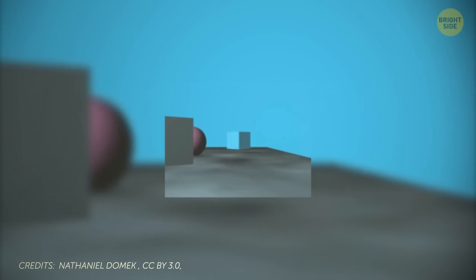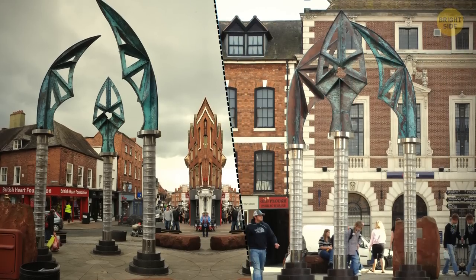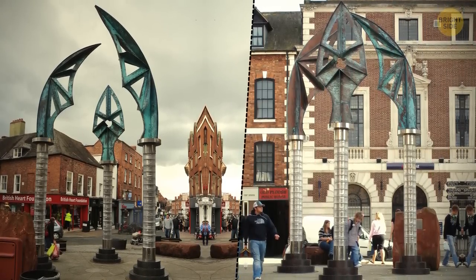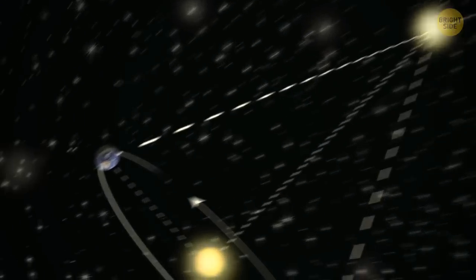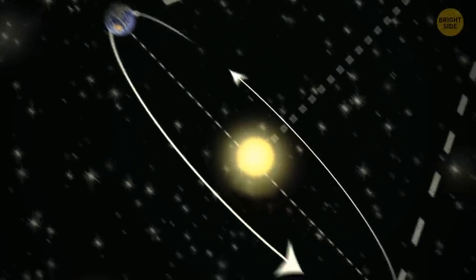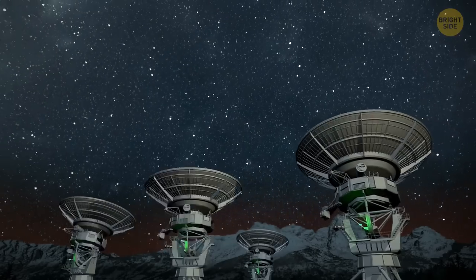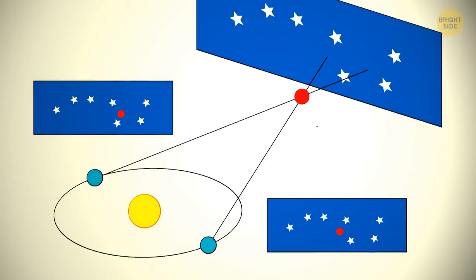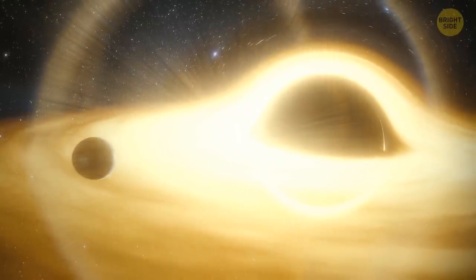Parallax is the shift an object seems to make when viewed from two different perspectives. Looking at an object with your left eye and then your right eye, you'll see the object appear to shift. That's parallax. When an astronomical object is photographed with the Earth on one side of the Sun, and then again six months later on the other side of the Sun, the shift is measurable in degrees of arc, or minutes of arc, or seconds of arc, down to milliseconds of arc. That's a parsec, a parallax of one arc-second, which turns out to be 3.26 light-years.